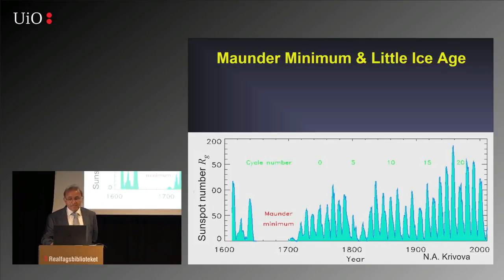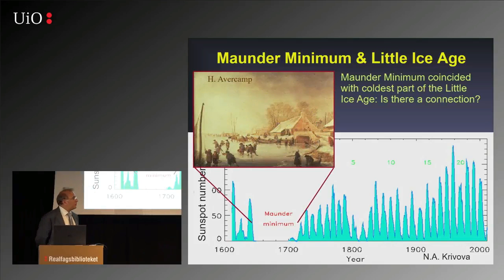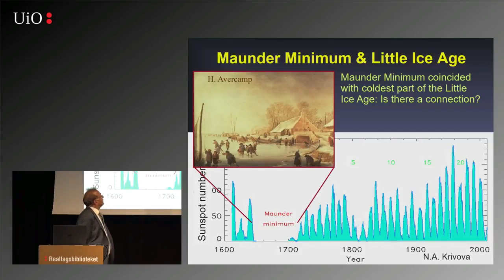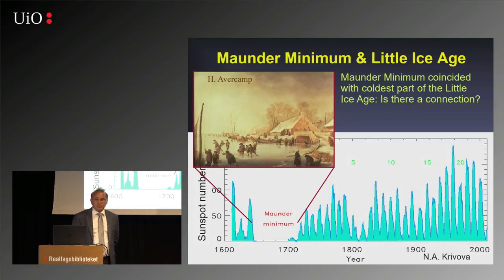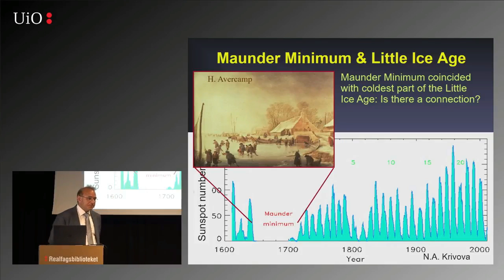And at the same time, that was the so-called Maunder Minimum — when there were no sunspots — was also the time when, at least in Europe, we had the coldest part of the Little Ice Age.